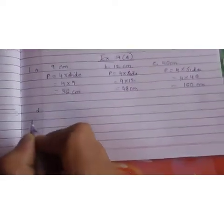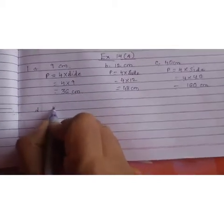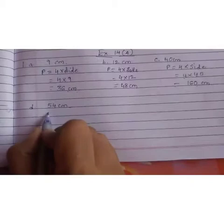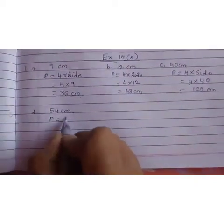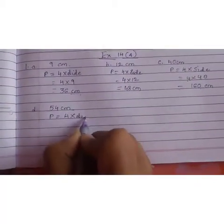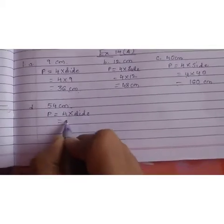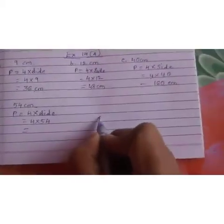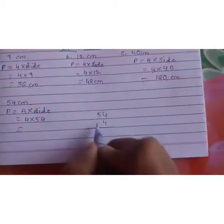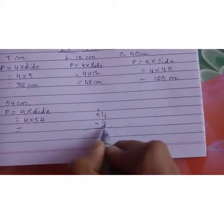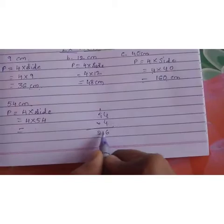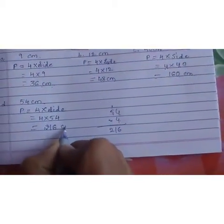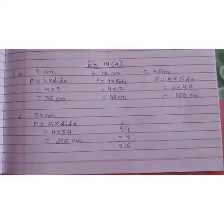We have another question in this. D, 54 centimeters. Again, write the formula. P equals 4 into side. That is 4 into 54. Multiply. If you don't know, just multiply. 4 fours are 16. 4 fives are 20 plus 1, 21. So write 216 centimeters. Is it clear, children?